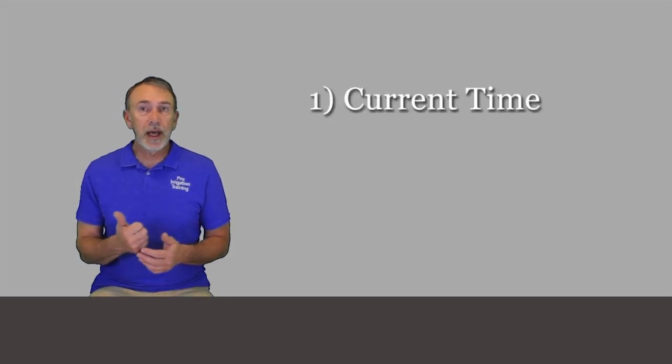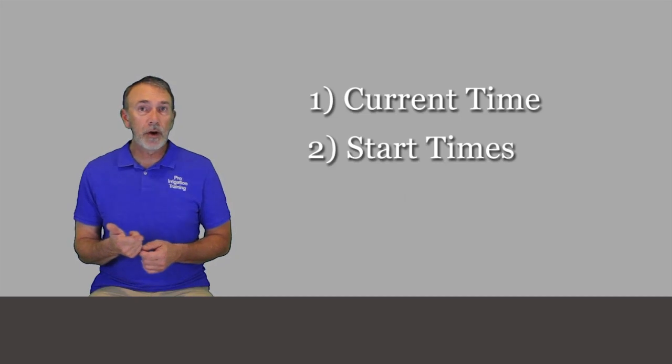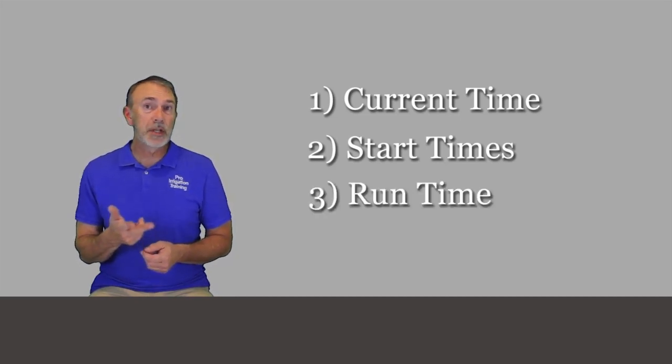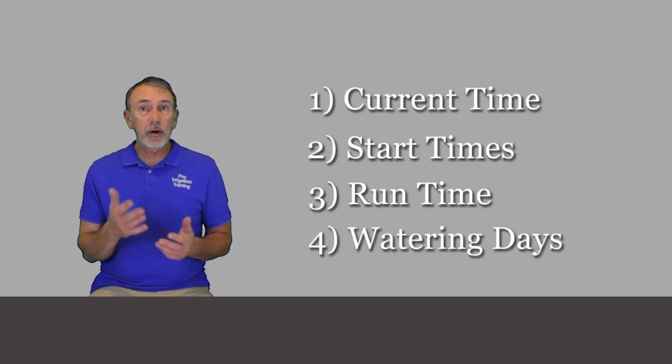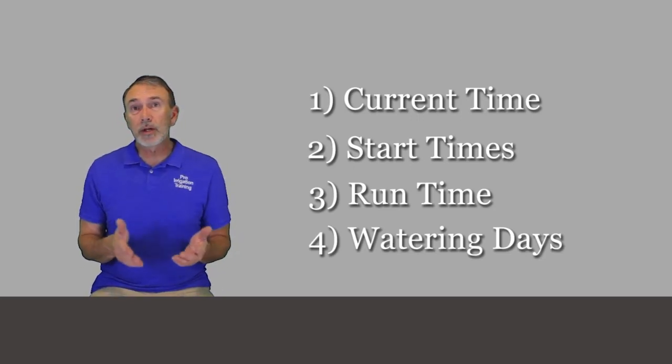If you look at a permanent irrigation controller installed in a professional irrigation system, it would have all the programming features that you would find on this one. On a big system, we'd be talking about multiple zones, but with this hose-end irrigation timer, it's just one zone. When we look at the programming, it's going to have all the features - it's going to know the current time and day, what time you want the watering to start, how long you want this zone to run for, and what days of the week or interval of days that you want to run it on.